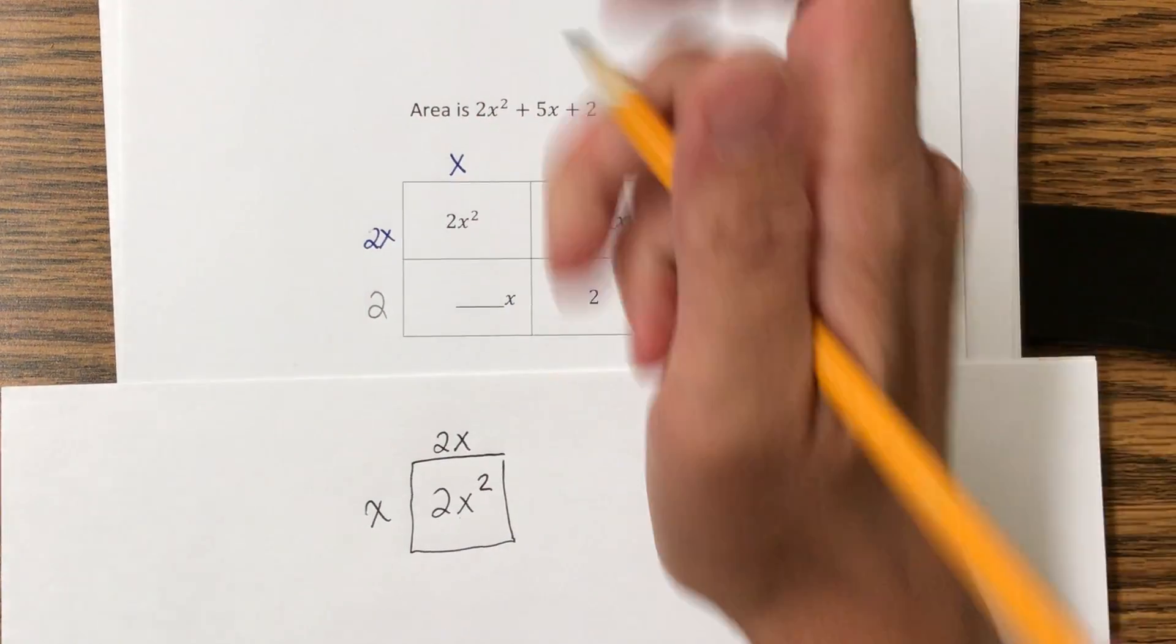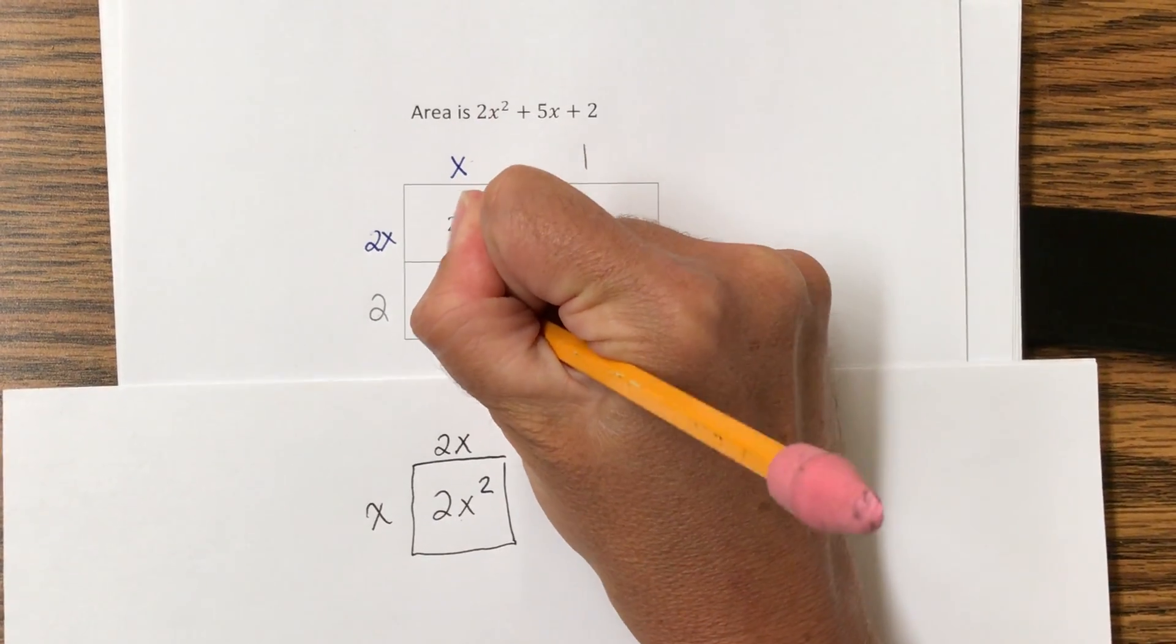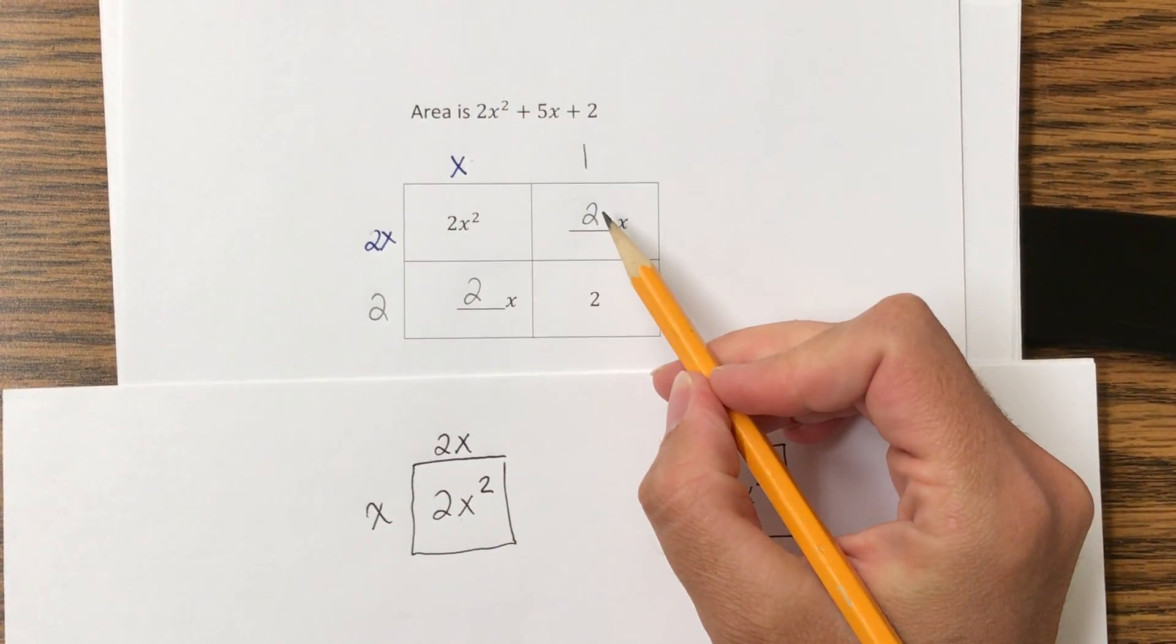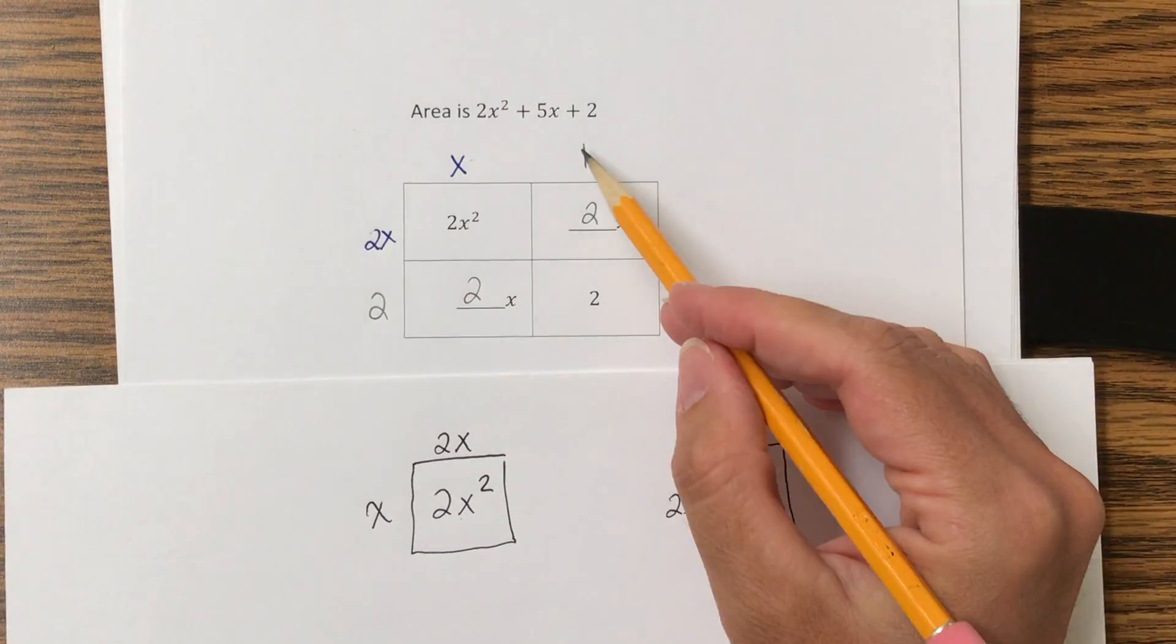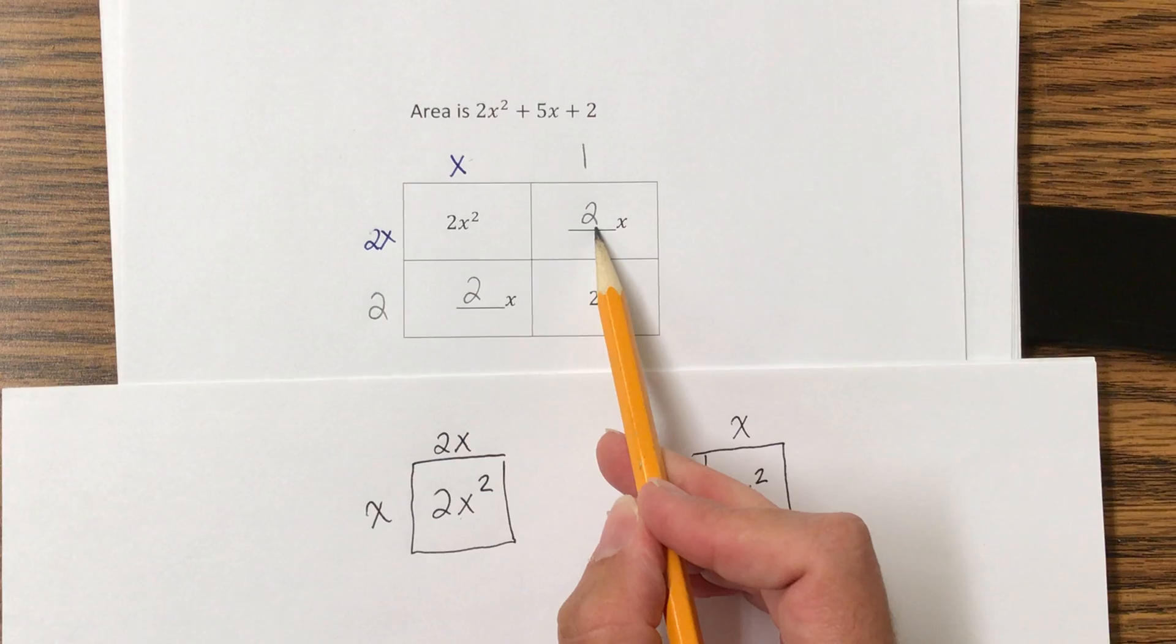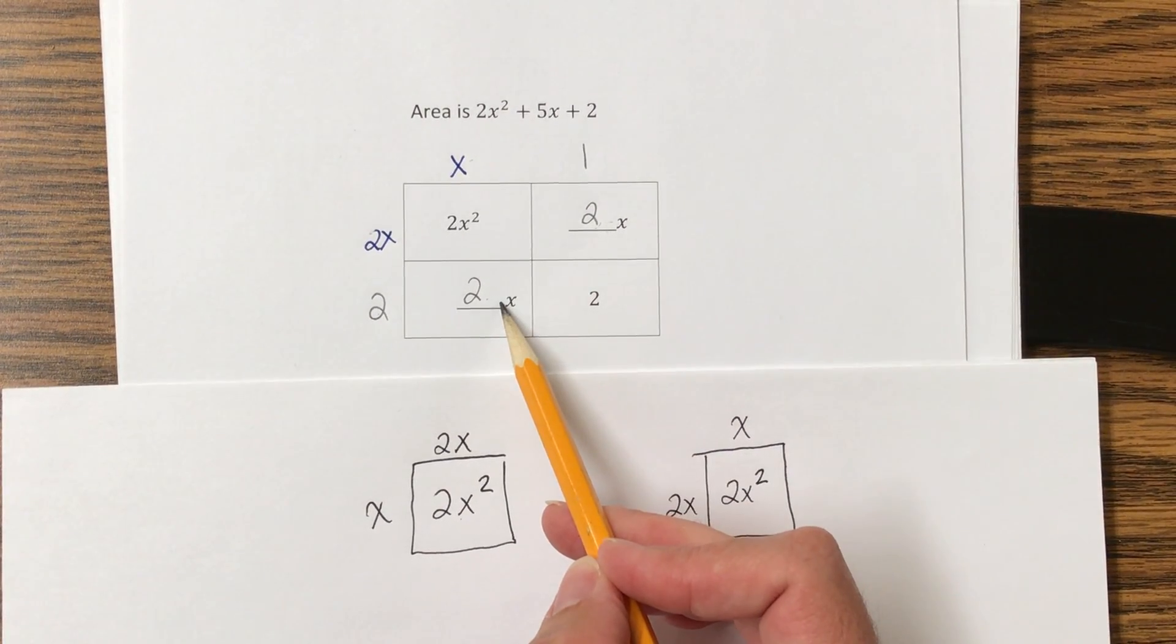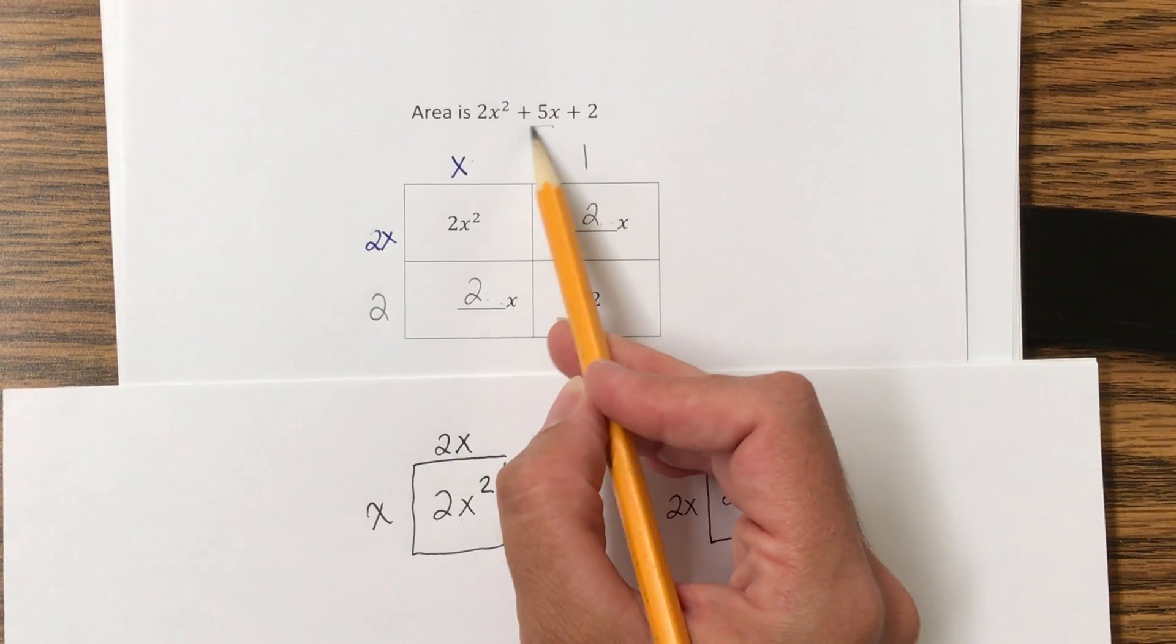2x times 1 is a 2x. x times 2 is a 2x. So now I've got these dimensions, but does it give me the correct area? You see, when I add these two together, 2x and 2x, there's no possible way that that's going to add to a 5x.